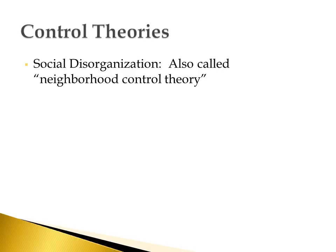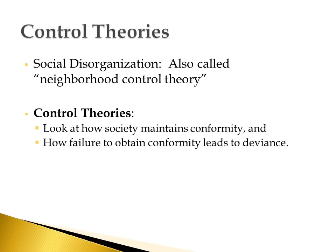Today we're going to talk about the rest of the large field in criminology that we call control theories. In the last class, we talked about social disorganization, and a lot of people refer to that area as neighborhood control theories. That's because social disorganization is a control-based theory of crime — it believes that there are neighborhood-level influences which control residents and restrain them from committing crime. Today, we're going to talk about theories at the individual level.